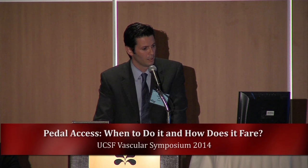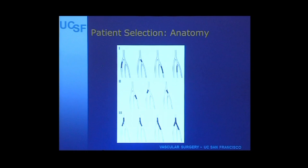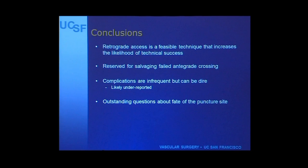For patient selection by anatomy: lesions with a little stump of reasonable length are ones you can usually get through antegrade. But flush occlusions where you can't engage, or occlusions involving the trifurcation where you have to steer across into another vessel through the occlusion - those can be very difficult to manage antegrade, and that's where retrograde would be most useful. In conclusion, it is a feasible technique that increases your rate of technical success by giving you another crack at it, but it should be reserved for salvaging a failed antegrade crossing. Though complications appear infrequent, they can be rather dire, and my guess is they're underreported. There remain outstanding questions about the long-term fate of the puncture site.